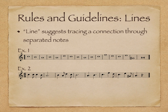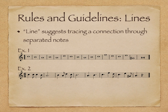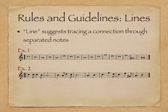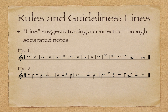Good counterpoint begins with a good melodic line. We call it a line because it suggests tracing a connection through separated notes. Listen to example one and notice how a smooth line could be traced through the entirety of the example. Listen to example two, which is a rhythmicized version of example one. It's important to understand that good underlying lines can make a good melody with rhythm added.